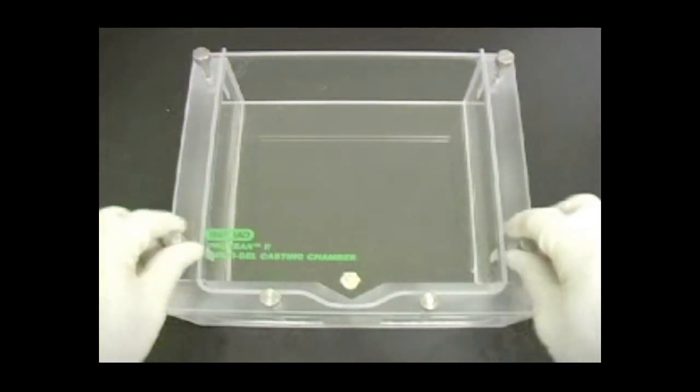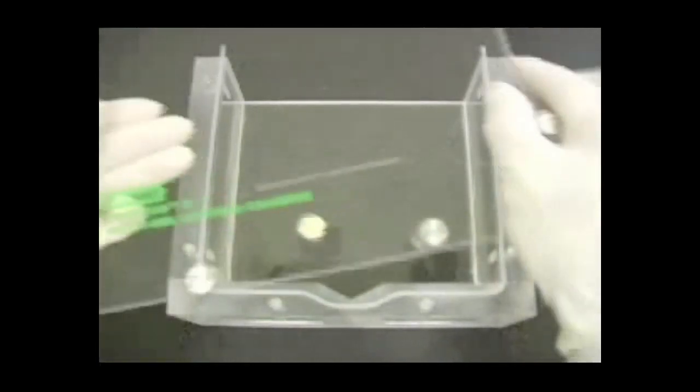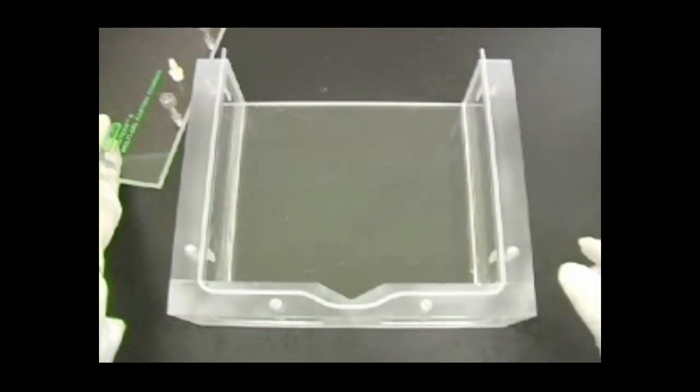Set the casting chamber face up on the bench top. Loosen the thumb screws and remove the sealing plate. Determine the number of gels you will be casting.